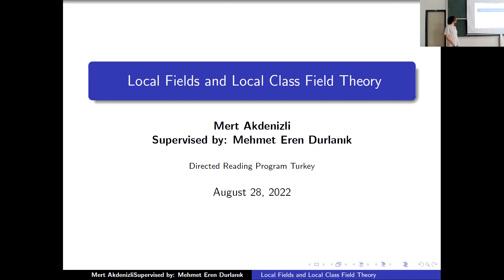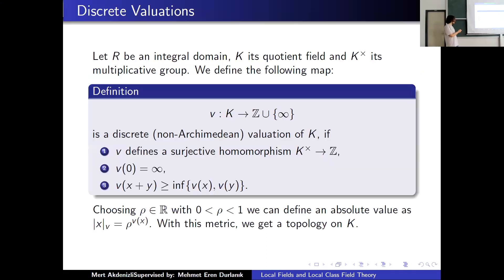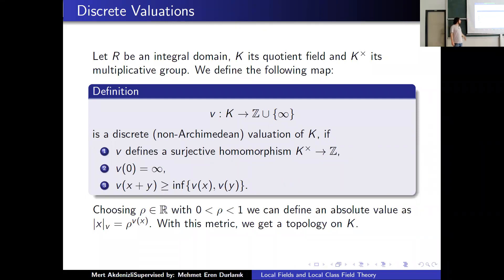We will first define what a local field is, and we will look at their abelian extensions. So let's say R is an integral domain, K is its quotient field, and K* is the multiplicative group. We define this map, which is called a discrete valuation, if it defines a surjective homomorphism from K* to Z.